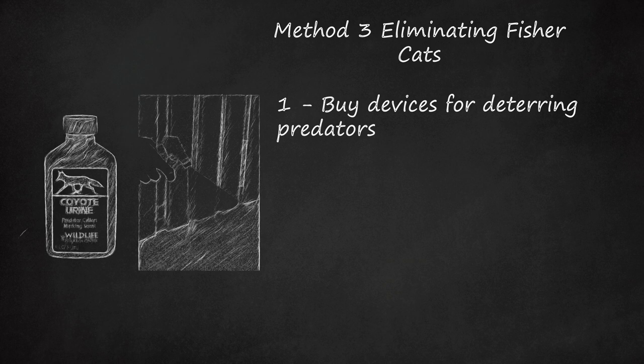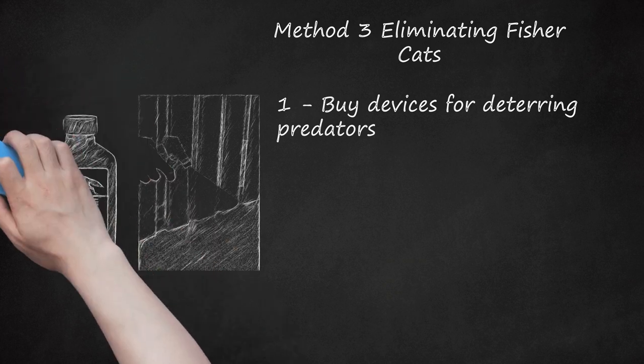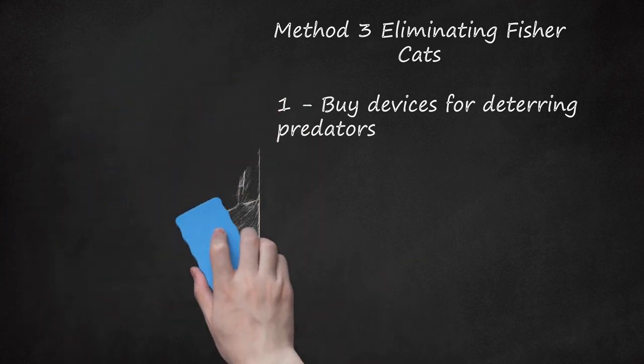A similar device you can buy online and in some stores is a night guard black box with a solar panel at the top. It flashes a single blinking red light, which is designed to simulate a red predator eye, and you should hang it above the coop door.